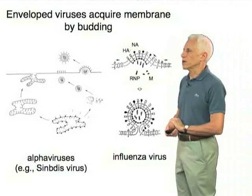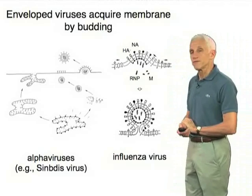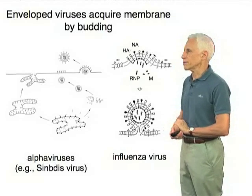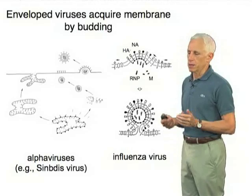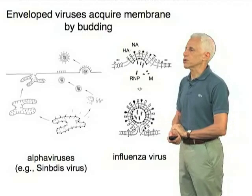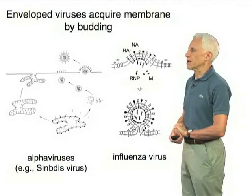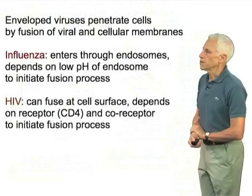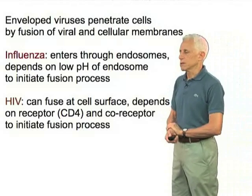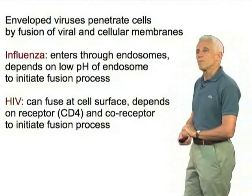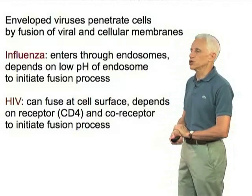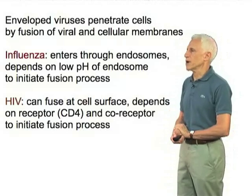As those of you who watched part one will know, enveloped viruses — those with lipid bilayer membranes — acquire their membrane by budding out through the surface or into an internal compartment of the host cell. And likewise, they penetrate cells that they are about to infect by fusion, a reverse of the budding process, by fusion of viral and cellular membranes.